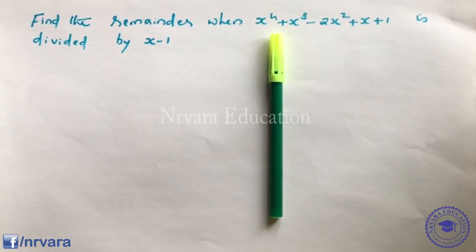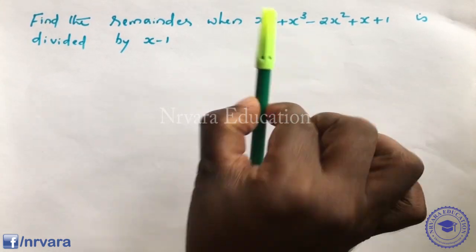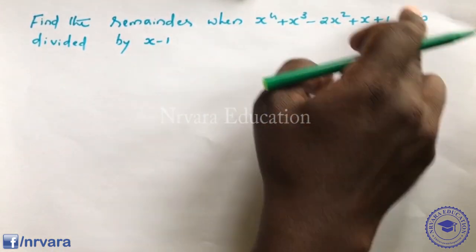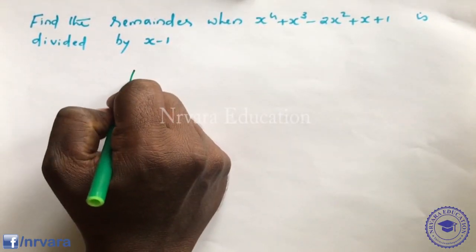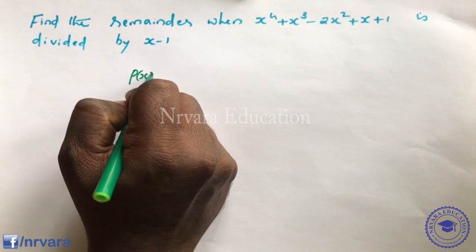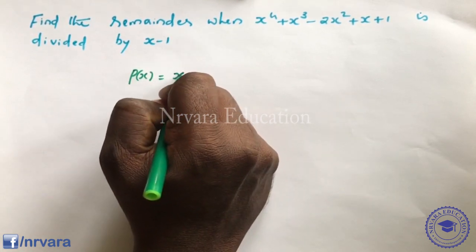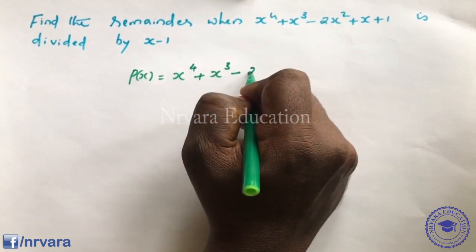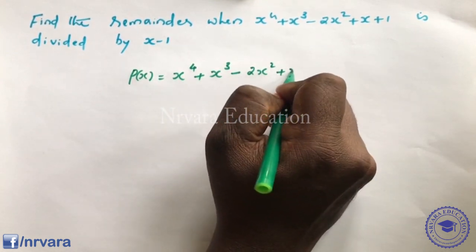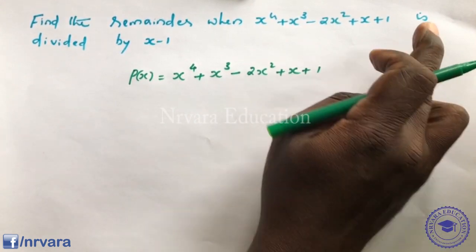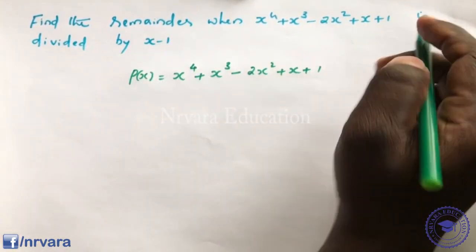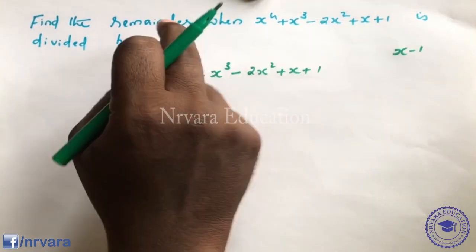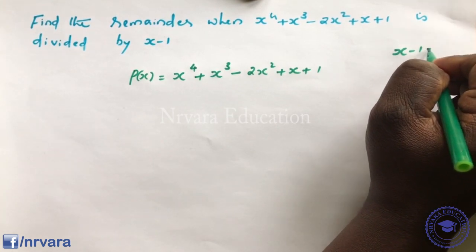Ok, so we have the remainder theorem. Let's find the remainder when the polynomial p(x) = x⁴ + x³ - 2x² + x + 1 is divided by (x - 1).